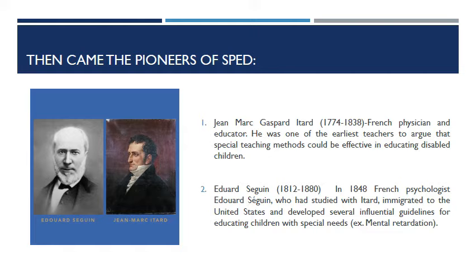We also have Edward Seguin, a French psychologist who had studied with Itard, immigrated to the United States, and developed several influential guidelines for educating children with special needs — particularly children with mental retardation. Seguin's education program stressed the importance of developing independence and self-reliance in disabled students by presenting them with a combination of physical and intellectual tasks.